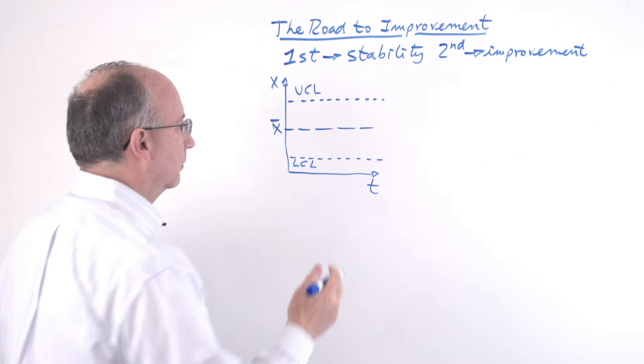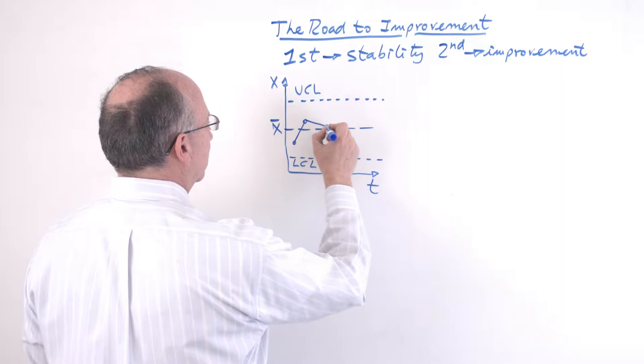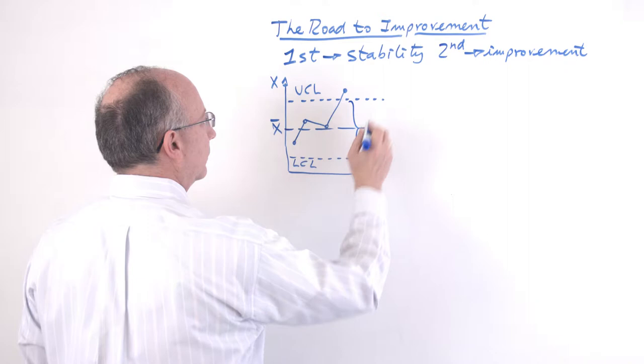Like for instance, you could have one value over here and then the next time it's over here and then you're over here and then you're over here. And what you can see here is that the control chart is telling us what is the range of natural variation.